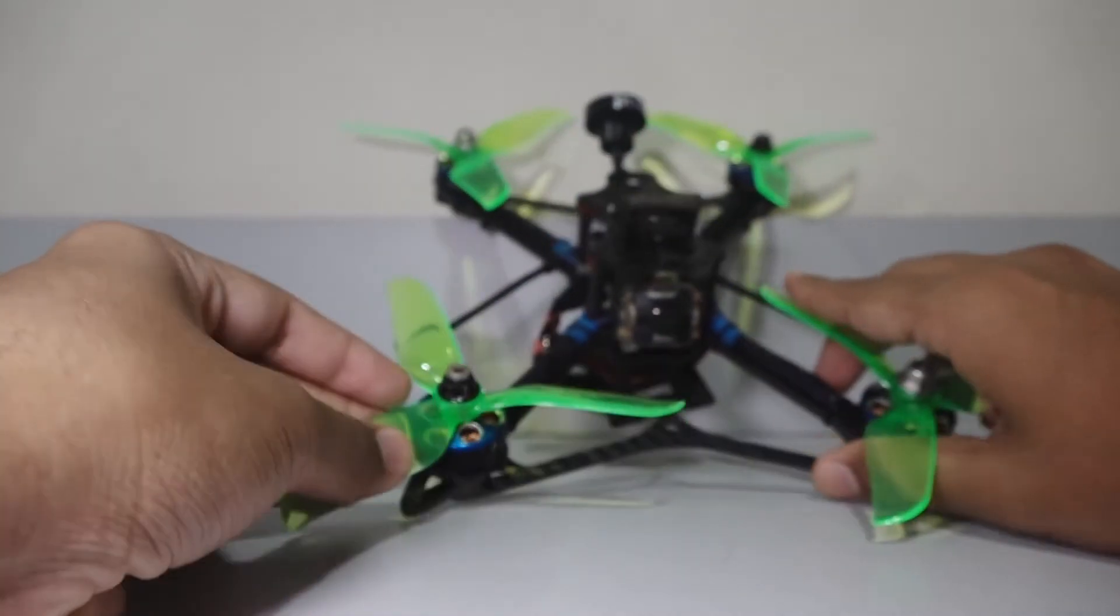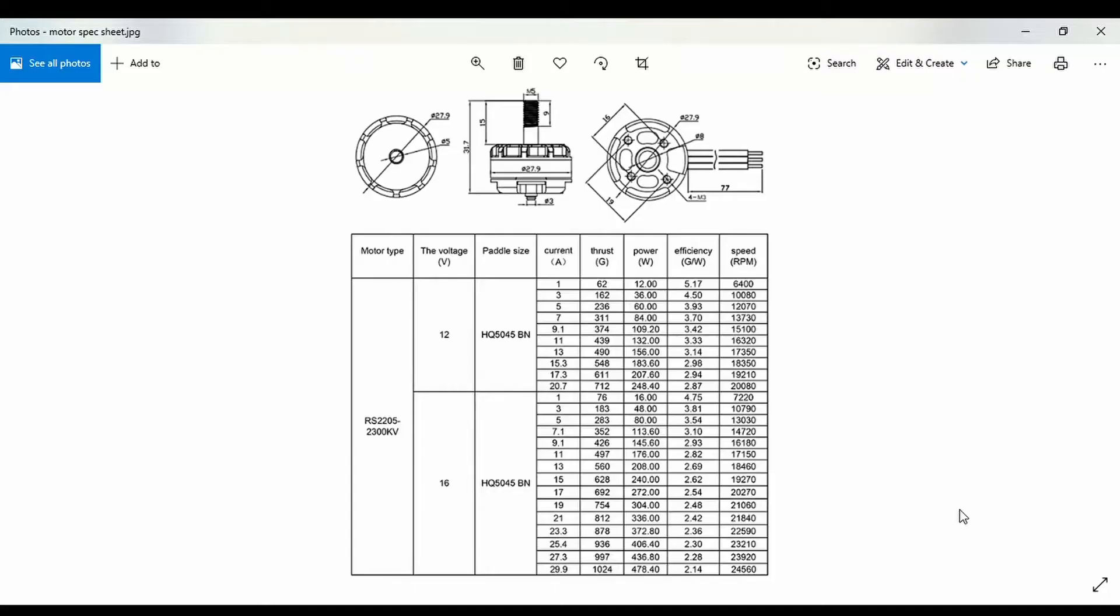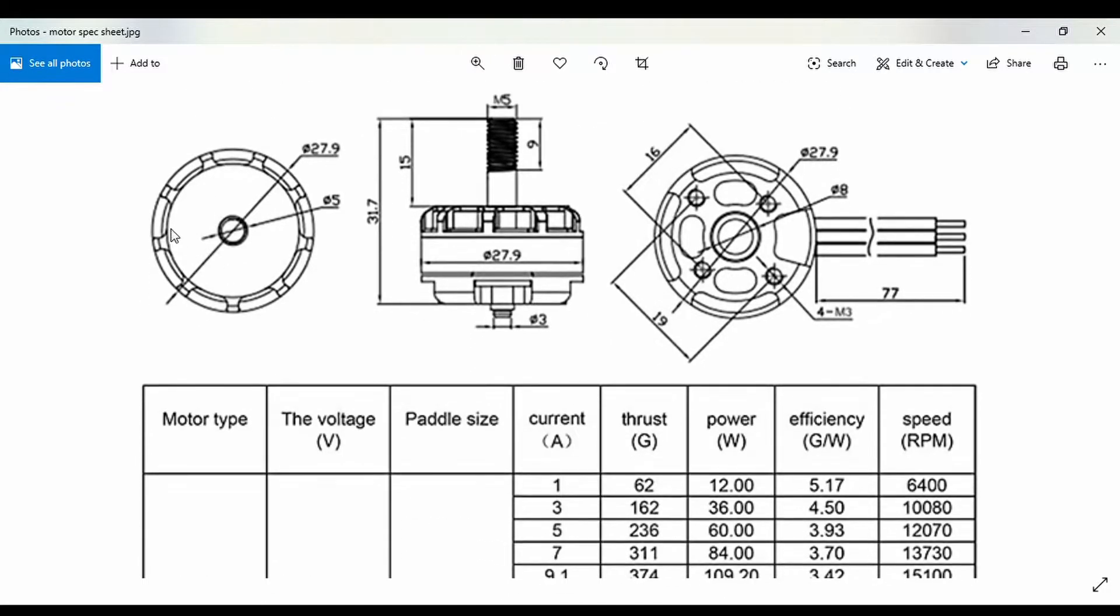The most important part is to look at the motor spec sheet, which we will be seeing on the screen now. This is the motor spec sheet, available under the motor web page. Here you'll find a diagram of the motor showing various dimensions of its components.